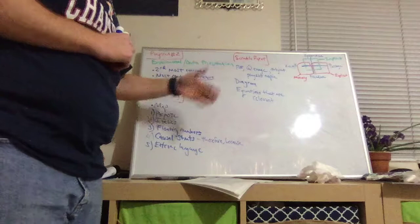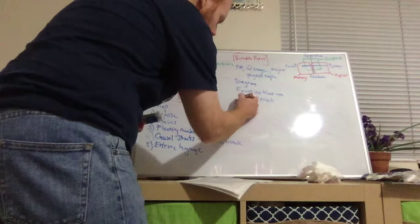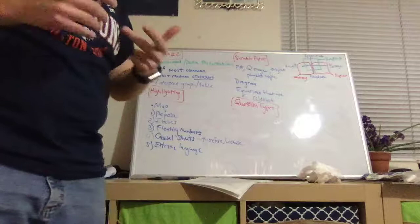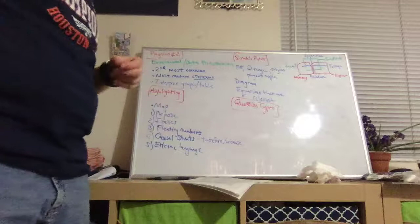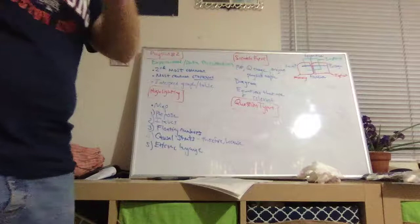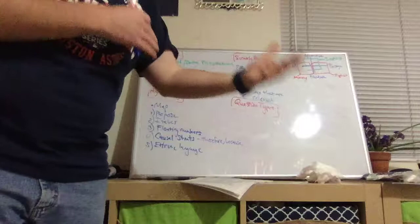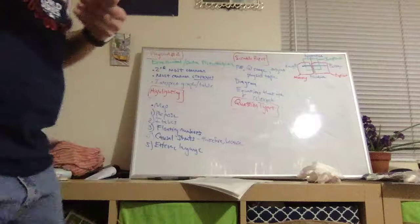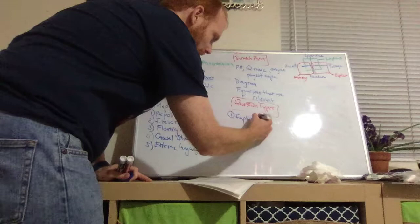Now the third thing that we should discuss are the question types, and how would these question types show up on an experimental or data presentation style passage? A lot of these questions are going to be the kind that say, if one thing gets changed, how would the data change? If one independent factor changes, how does the dependent factor change? So we know there's three question types. We've got it on our diagram up here: memory, explicit, implicit. Let's start by talking about the implicit question type as it relates to the experimental or data presentation style passage.